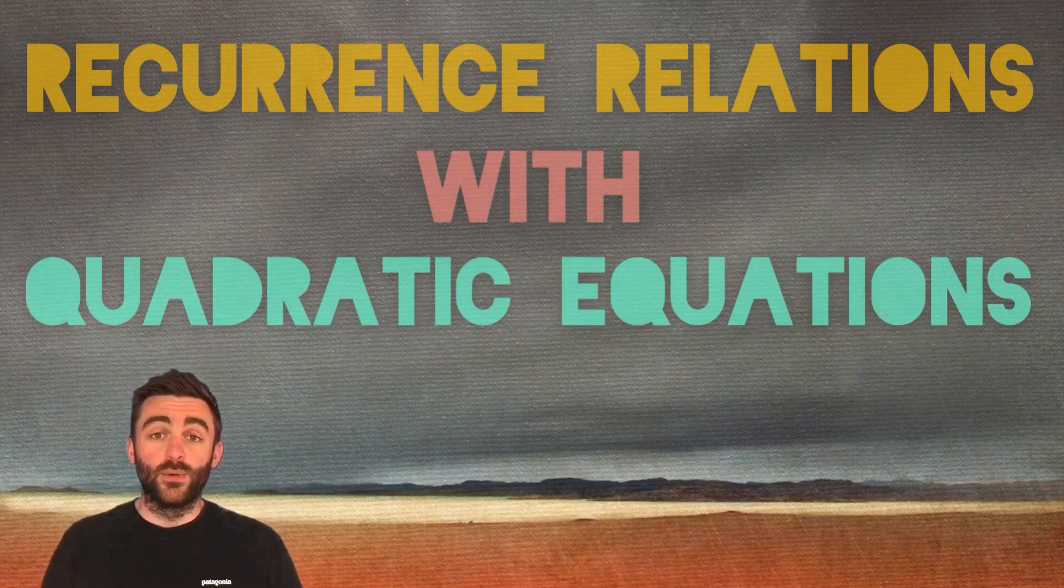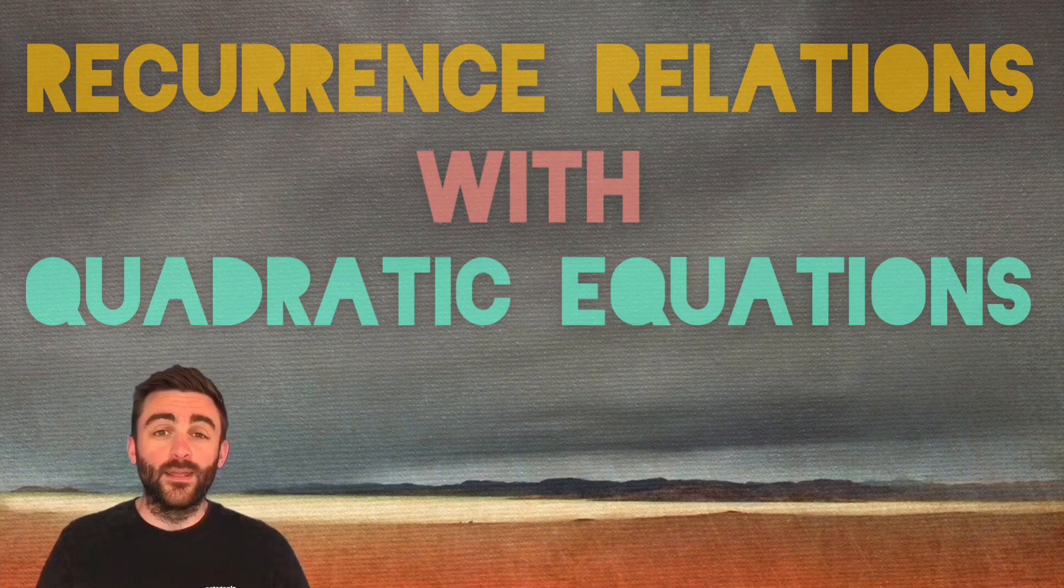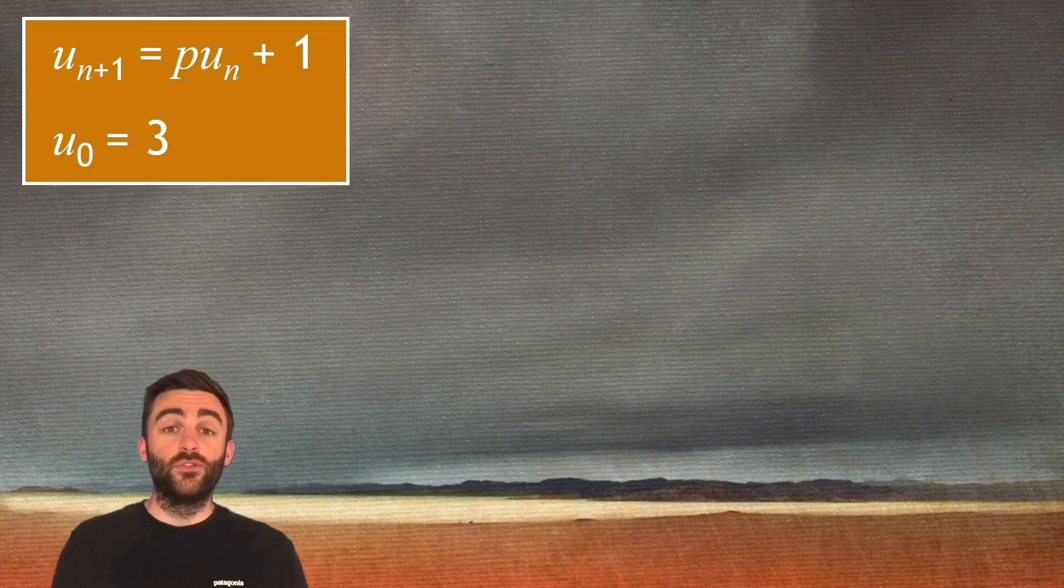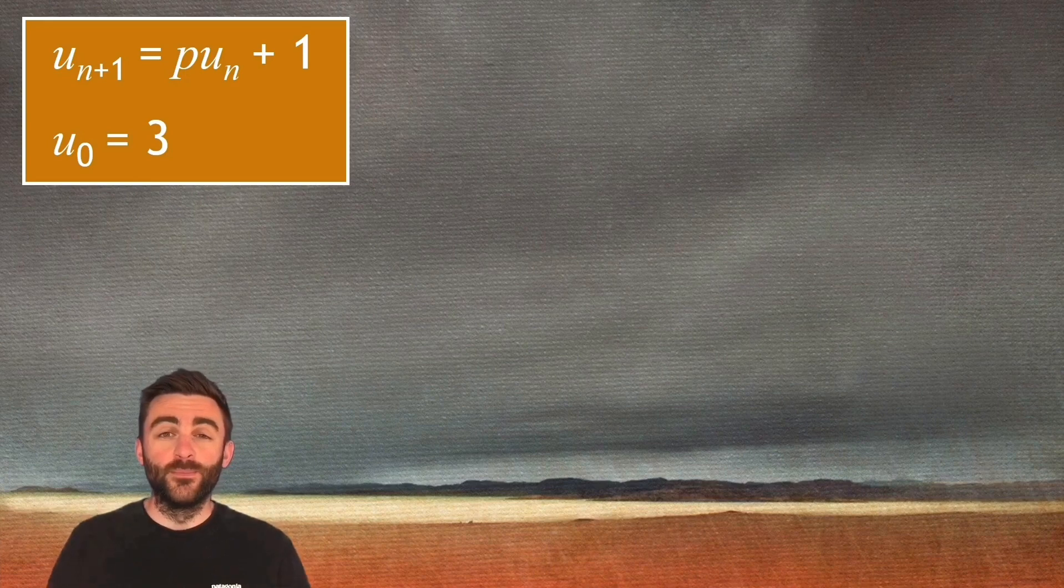Another commonly occurring recurrence relation question which features an unknown value is one which leads us to a quadratic equation to solve. In this case we're usually presented with a recurrence relation which has one unknown value, in this case p.